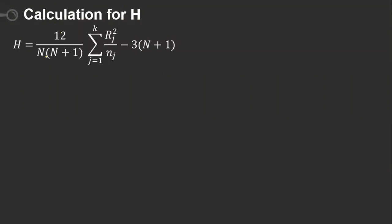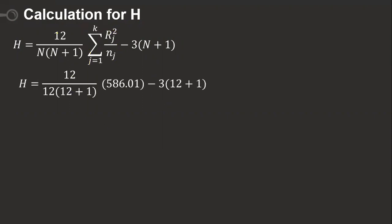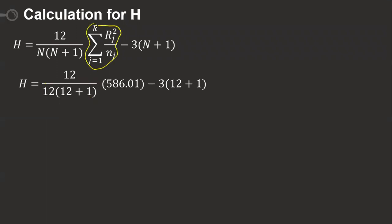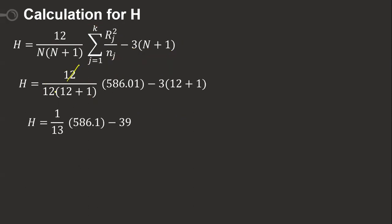Using the H formula: H equals 12 divided by 12 times 13, multiplied by 586.01, minus 3 times 13. The 12s cancel, giving (1/13) times 586.01 minus 39. This equals 45.077 minus 39, so H equals 6.077. This is my calculated value.